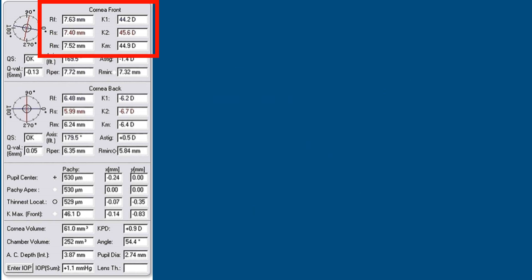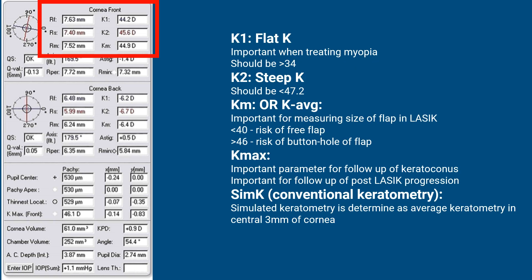There are some parameters in the top right-hand corner. K1 is the flat K, K2 is the steep K, and KM or K average is important for measuring the size of the flap in LASIK — less than 40 is a risk for a free flap and more than 46 is a risk for a buttonhole in the flap. Kmax is the maximum curvature; it is important for the follow-up of keratoconus and for post-LASIK progression.